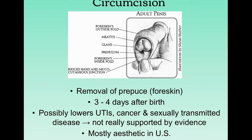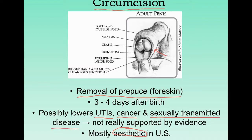The final topic is circumcision — the removal of the prepuce or foreskin around the glans penis. In the US it is mainly considered for aesthetic purposes, but it may also lower the chance of urinary tract infections, some cancers, and there is evidence suggesting a reduced chance of contracting a sexually transmitted disease during unprotected sex.